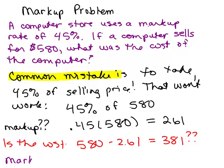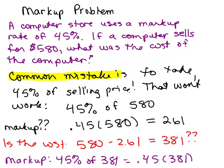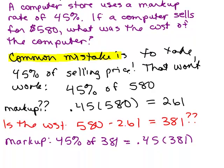The markup would be 45% of 381, which is 0.45 times 381, right? So let's do that now. What is 0.45 times 381? And that is $171.45.